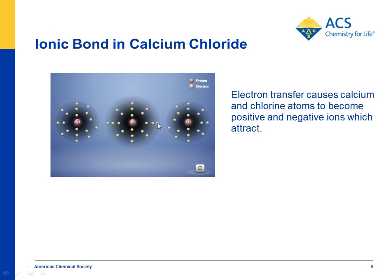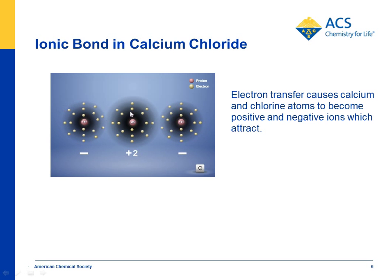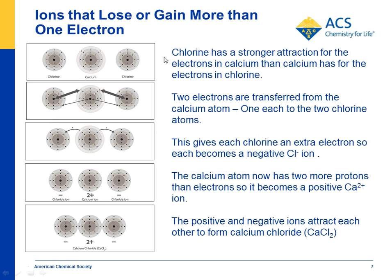The animation shows the stronger attraction, calcium becoming a two-plus ion because it lost two electrons, and each chlorine gaining an electron to become minus one, both attracted to the positive two charge. Like before, you can then take students through step by step to be sure they understand what happened.